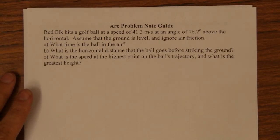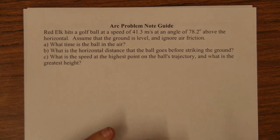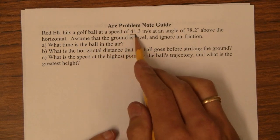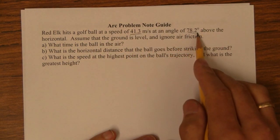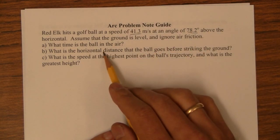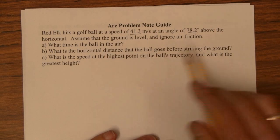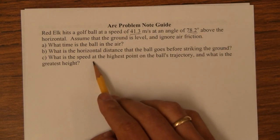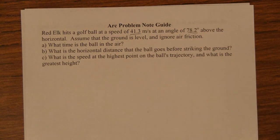In this video, I'm going to show you how to solve a problem where a projectile leaves the ground at an angle. In this one, Red Elk hits this golf ball and it leaves with a speed of 41.3 meters per second at an angle of 28.2 degrees. We want to know the time in the air, horizontal distance it goes before it strikes the ground or the range, and what is the speed at the highest point on the ball's trajectory and the greatest height.